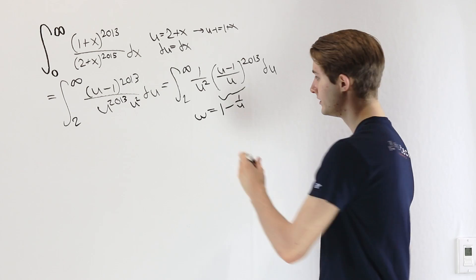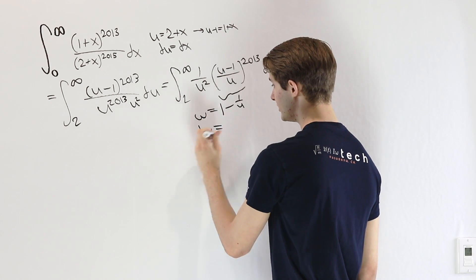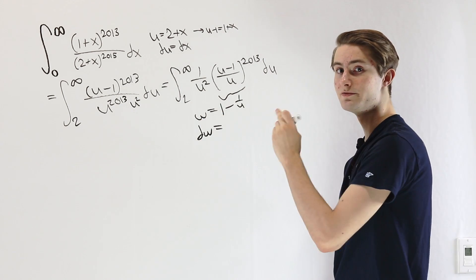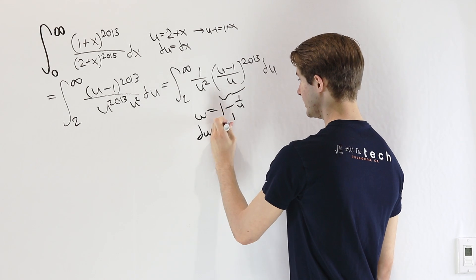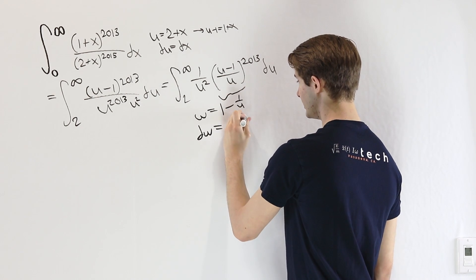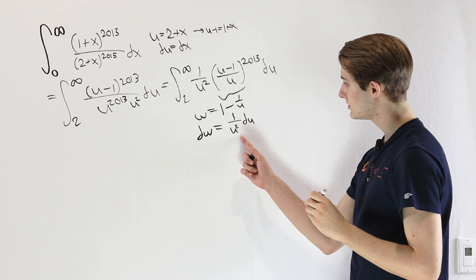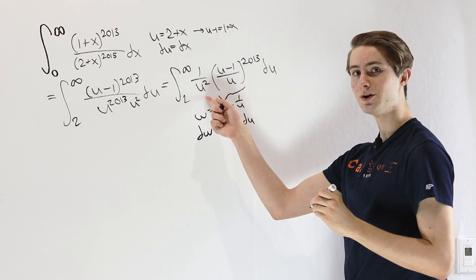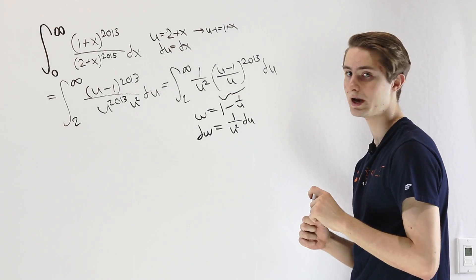And from there, what is dw? Well, the derivative of 1 is 0, and the derivative of -1/u, that's going to be 1/u^2. So this 1/u^2 du we already have on the outside, thanks to that difference in powers.